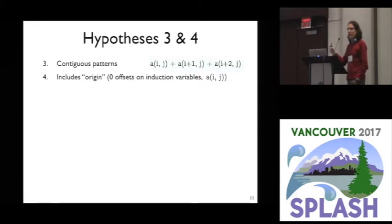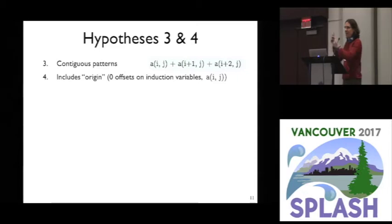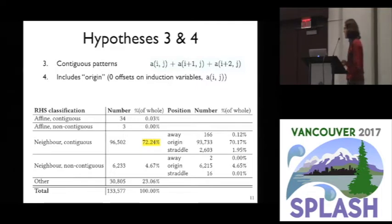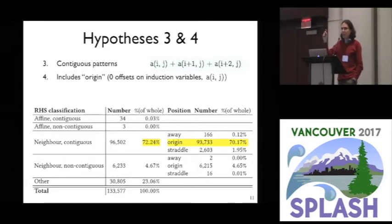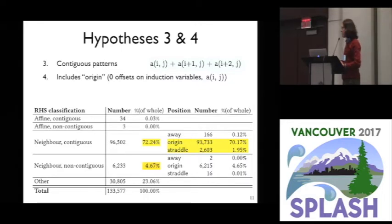Our initial hypothesis was confirmed that people use arrays with these neighborhood accesses. We also observed that they use a contiguous pattern of array reads — without holes — and they tend to include the origin point. So if you have induction variables i and j, they index array A at i, j — neighborhood with zero offsets. Indeed, 72% of all array computations are neighborhood indexing which is contiguous, and 70% are neighborhood contiguous and involve the origin point. We also found some non-contiguous behavior, but at a smaller proportion.